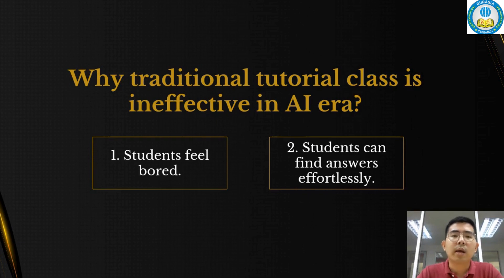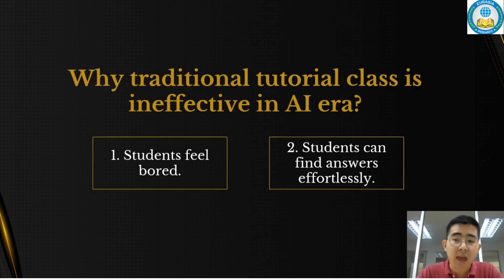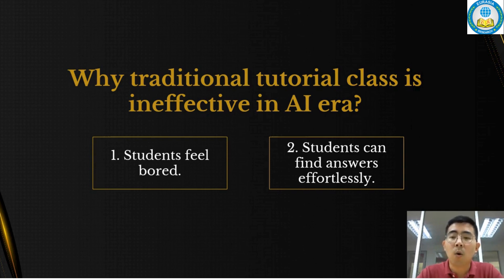So, why are traditional tutorial classes ineffective in the AI era? First, students vote with how these classes are conducted. Typically, students attend tutorial classes, work on the tutorial questions, and then discuss the answers with the lecturers. This repetitive process occurs every week for 14 weeks across approximately 5 to 6 courses every semester. As a result, lecturers often observe that students show little or no interest at all in completing the tutorial questions.